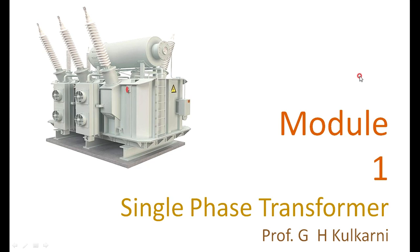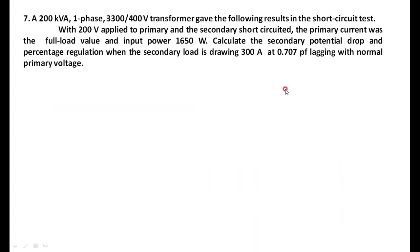We will continue with the numericals on the equivalent circuit, finding the parameters of the equivalent circuit, and the regulation and efficiency of the transformer. We will take the next numerical: a 200 kVA single-phase 3300/400 volt transformer with the following OC and SC test results. With 200 volts applied to the primary and the secondary short-circuited, the primary current was the full load value, and the input power is 1650 watts. Calculate the secondary potential drop and the percent regulation.